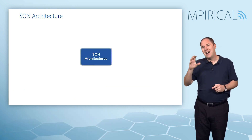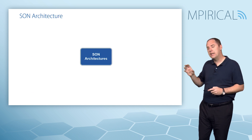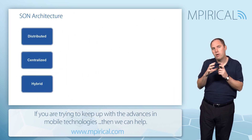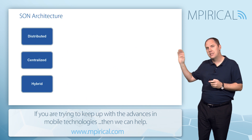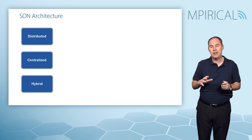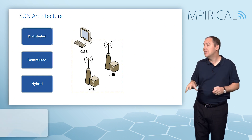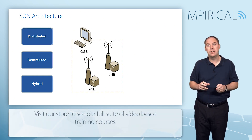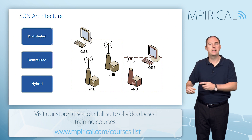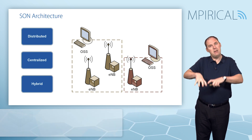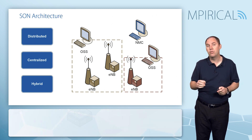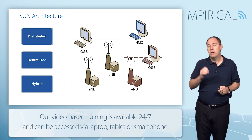Now we need to talk about where SON fits, and the terminology 'SON architectures' comes into play. There are three different options: distributed, centralized, and hybrid. In a typical radio access network you have your eNodeBs and an OSS system managing them. With small cell deployments you might have another vendor's eNodeB with their own OSS, all feeding back to a network management center controlling the whole network.